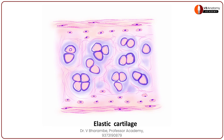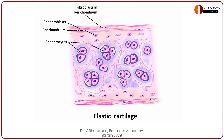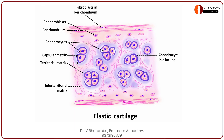Let's now draw and color the nuclei. There you have your elastic cartilage. Let's quickly label it now. This is the perichondrium containing chondroblasts in the inner cellular layer and fibroblasts in the outer fibrous layer. These are the chondrocytes existing inside the lacuna. Surrounding chondrocytes: the capsular matrix. Surrounding cell groups: the territorial matrix. Between territorial matrices: pale staining inter-territorial matrix. The entire matrix shows presence of elastic fibers. This is the elastic cartilage.